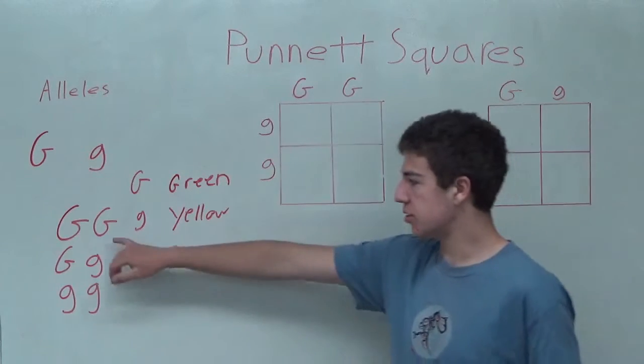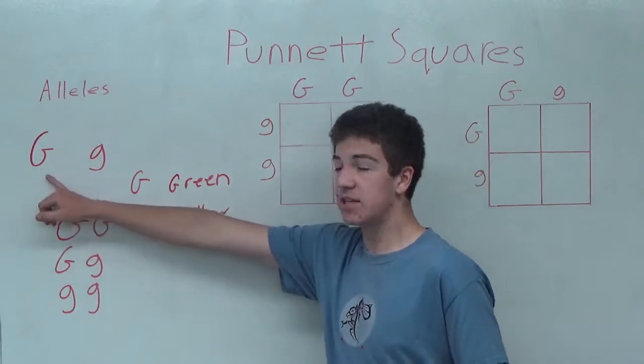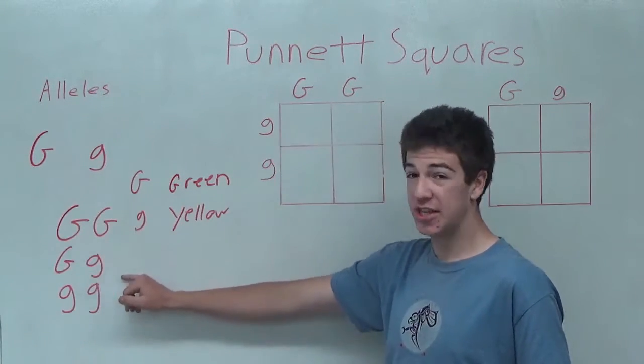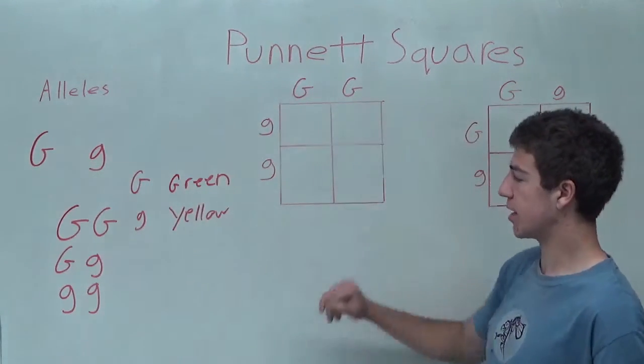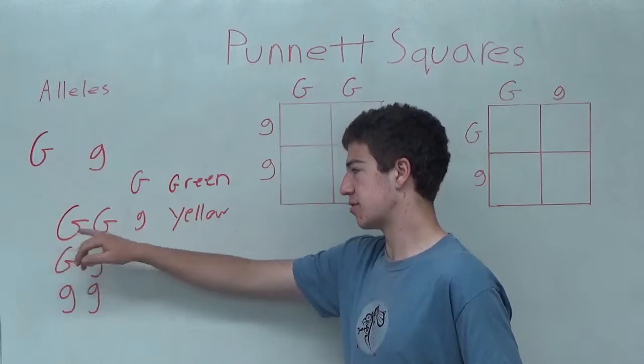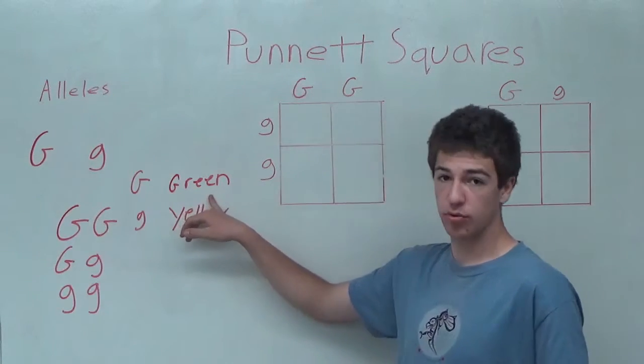So in these two, the first two, since there is at least one dominant allele in the genotype, which is what makes up the traits, it's going to show green.